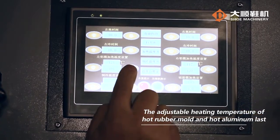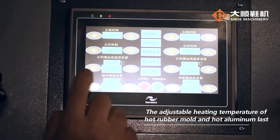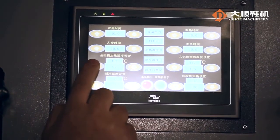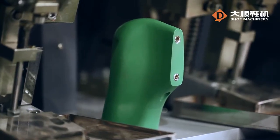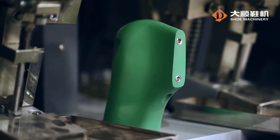The adjustable heating temperature of hot rubber mold and hot aluminum last helps to soften upper rapidly. The hot rubber mold is made from heat resistant silicone with long surface life.